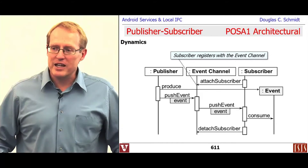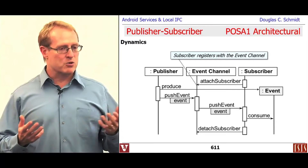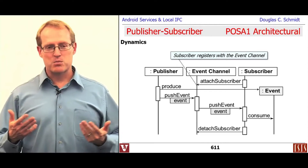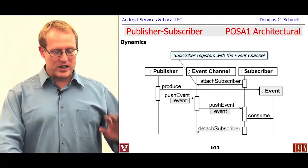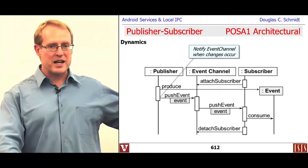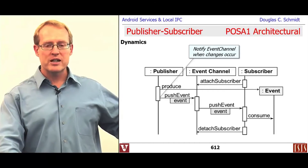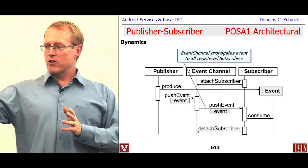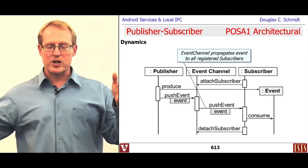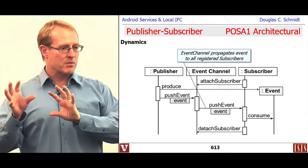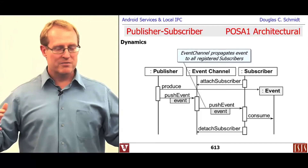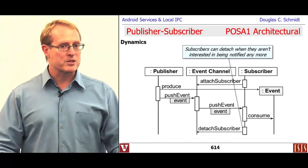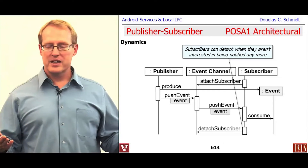Here's a quick summary of the dynamic interactions. It starts with subscribers registering with the event channel. When the publisher detects something that's changed that others may be interested in, it publishes the event to the event channel. The event channel checks which subscribers care about this particular type of event — maybe it goes to everybody, maybe a select few. Those events get pushed along and eventually delivered to the actual subscribers, who then consume the event in one way or another.